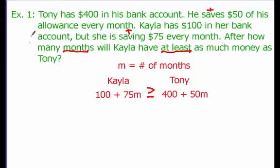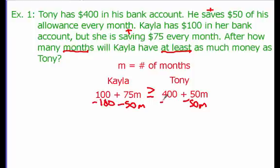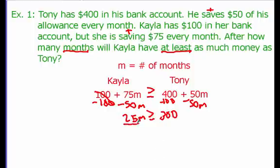Now we solve the inequality: 100 + 75M ≥ 400 + 50M. Subtract 50M from both sides and subtract 100 from both sides to get all variables and constants on one side. That gives us 25M ≥ 300. Dividing both sides by 25 — and since this is a positive number, the symbol doesn't change — we get M ≥ 12.